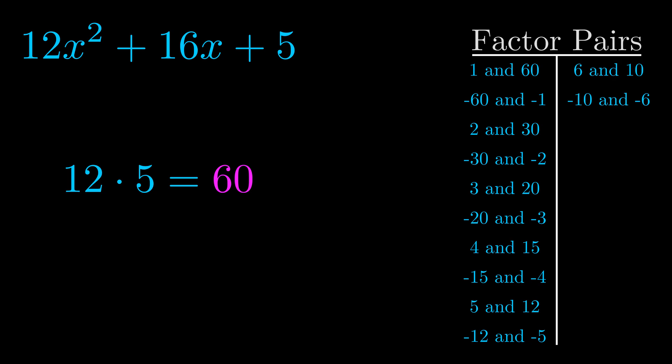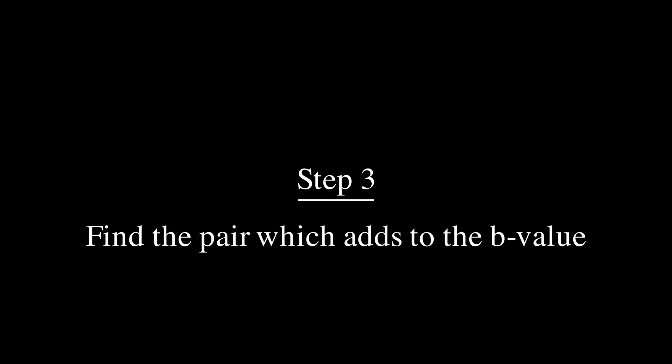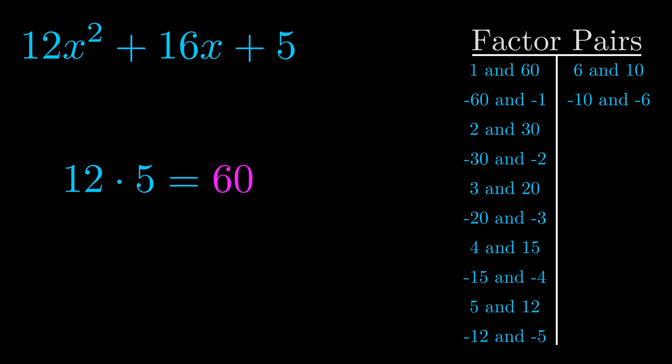Now once you have these factor pairs, the goal is to find which of these pairs adds to the b value. The b value is the coefficient on the x term. That's the middle term, the one that we haven't done anything with yet.